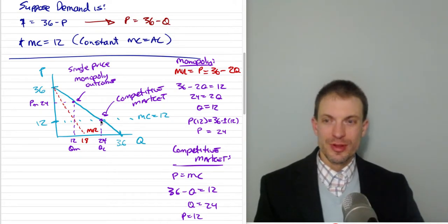Instead they reduce their output, that drives up the price by the law of demand, and this becomes profits or producer surplus and this would be consumer surplus.